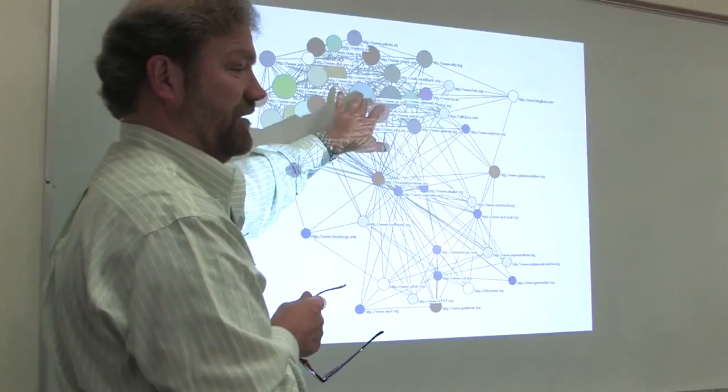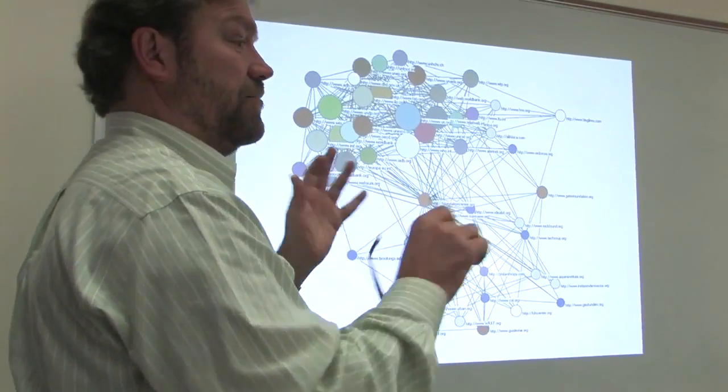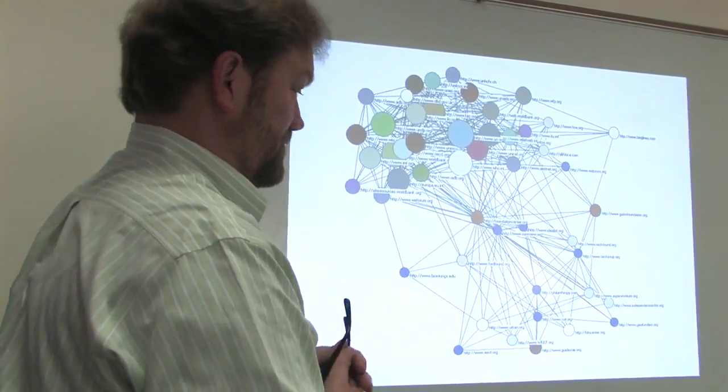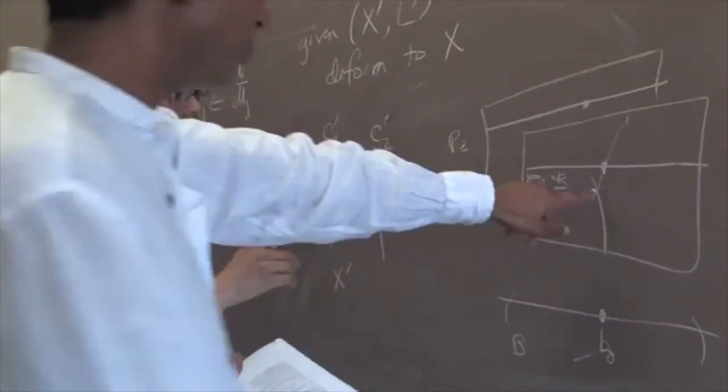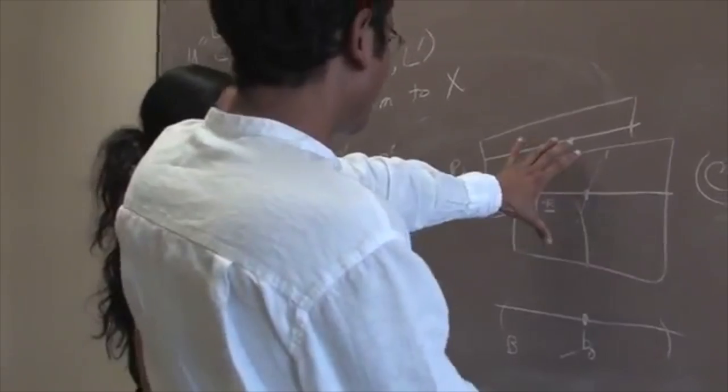Formal reasoning involves being able to specify and reason about an argument in some formal system. That can either be a logical system, a numerical system, or something like specifying a computer program.